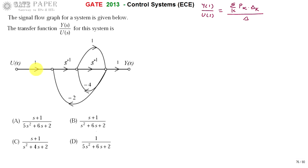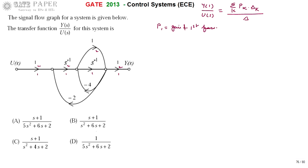First, find the number of forward paths. The first forward path goes through nodes 1-1-1-1-1, and the second forward path goes through 2-2-2-2. P1, the gain of the first forward path, is 1 × s⁻¹ × 1 × s⁻¹ × 1 = s⁻², which is 1/s².